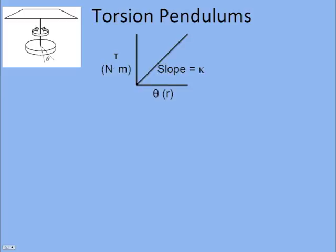If we twist it and measure the torque it takes to hold it for a given angle in radians, we can make a graph, and that graph will be a straight line as long as we don't twist it too much. If it is a straight line, we see the hallmark of simple harmonic motion: we have a restoring torque — not force, but restoring torque — that is proportional to the displacement, which is the angle twisted through.